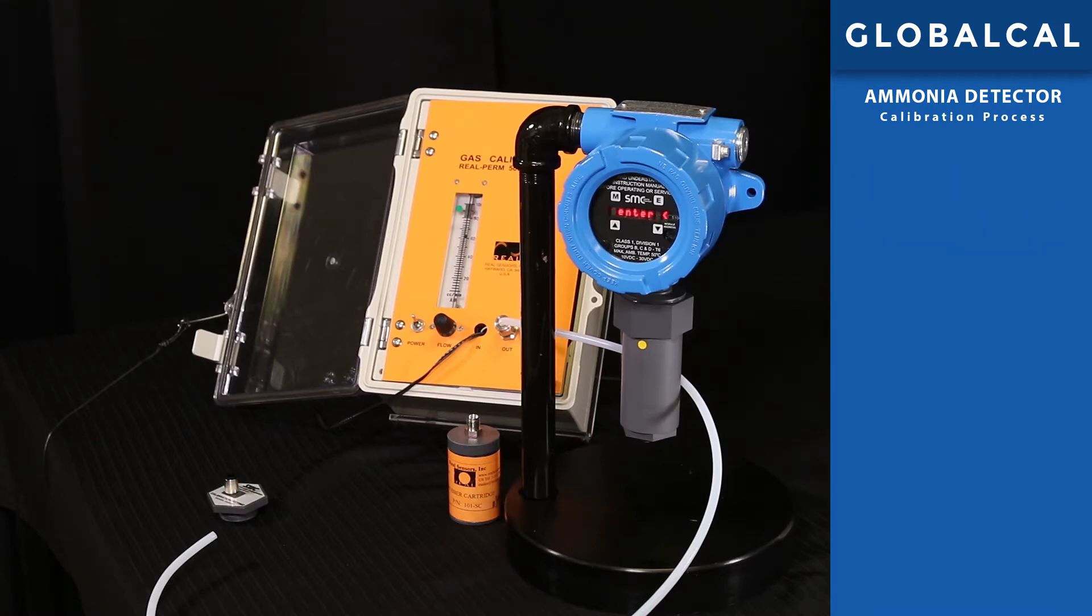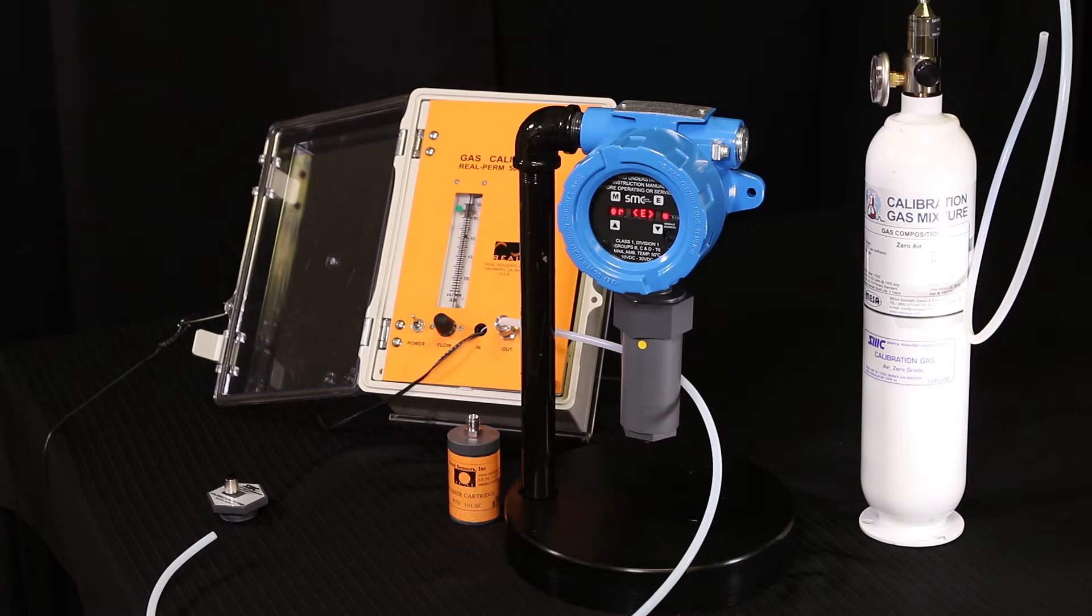First, confirm the span gas concentration. Note that this is an ammonia gas detector and we are using a 50 ppm gas as our standard for demonstration. Not all span gas concentrations are the same. Use a magnetic wand to tap the E key to confirm.